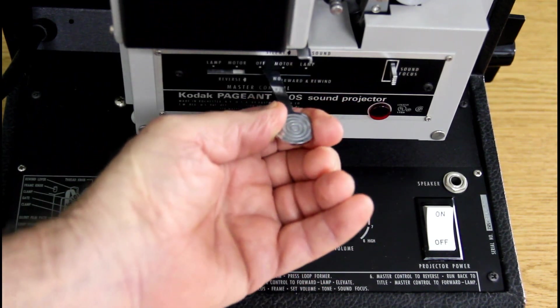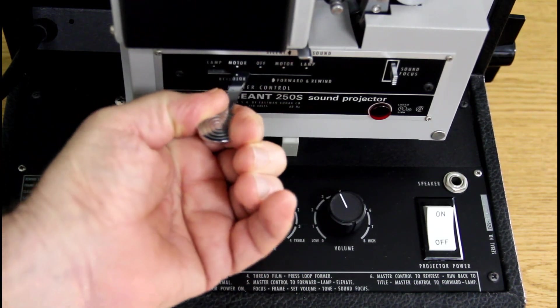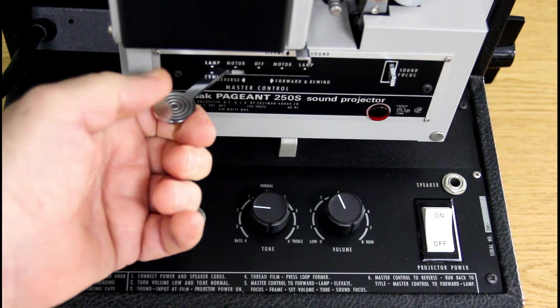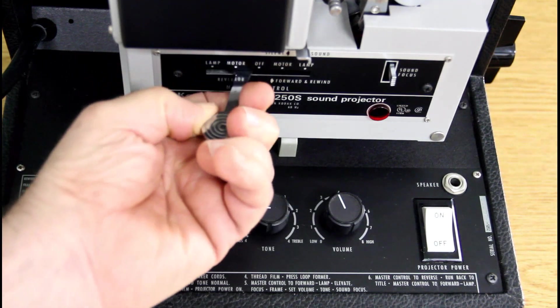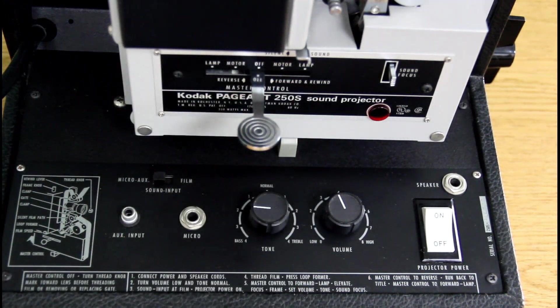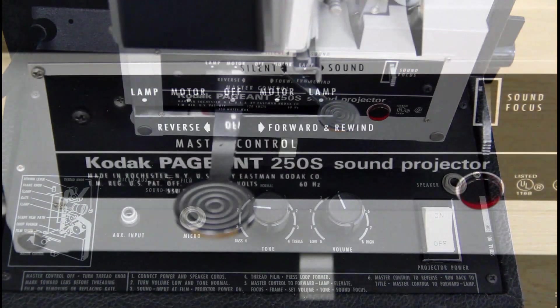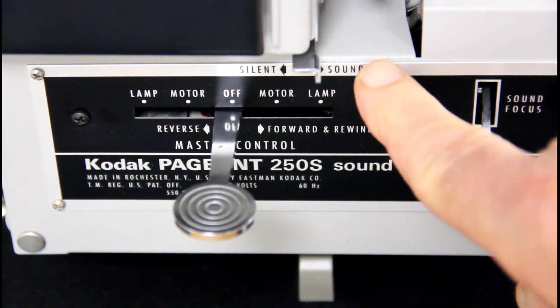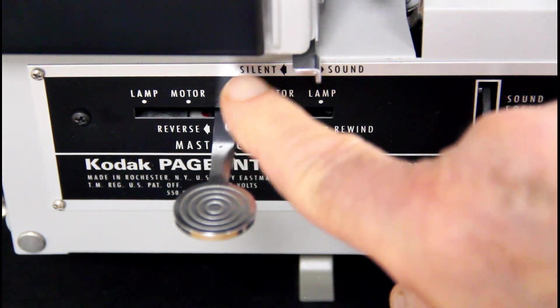This switch here, in this position you're strictly listening to the film if you have sound film. In this position, you can put an auxiliary mic in and narrate the film as well. This button is in the off position. This turns the motor on, and this turns the lamp on. There's motor, there's off, here's motor and lamp. This is reverse on this side and forward on this side.